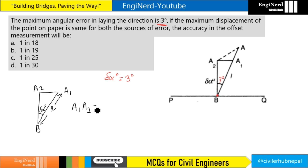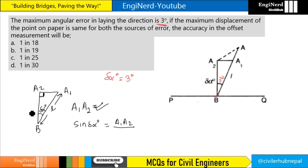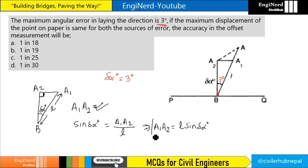We can calculate a1 and a2. This is a right angle triangle — here is 90 degrees. Using sine: sin(del_alpha) = perpendicular / hypotenuse = a1a2 / L. Therefore, a1a2 = L · sin(del_alpha). This is the displacement due to angular error.